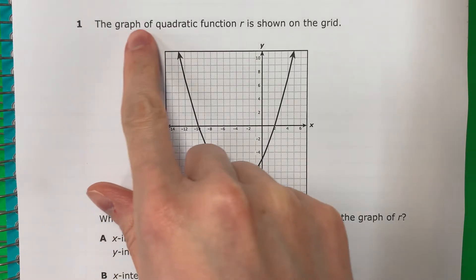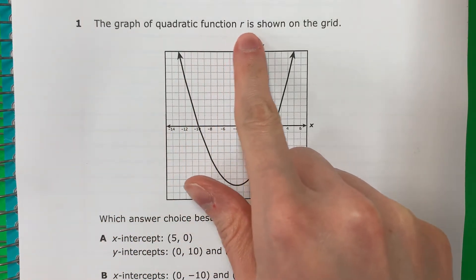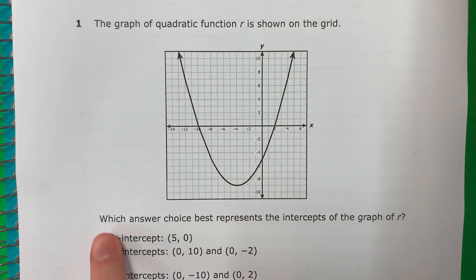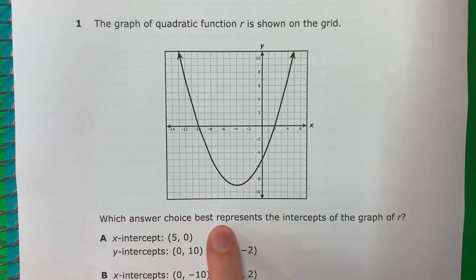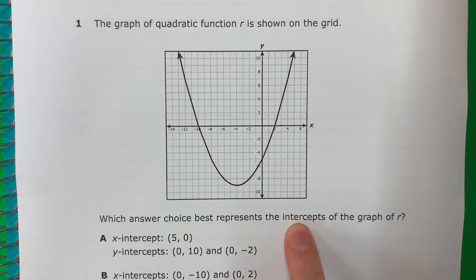Question 1. The graph of a quadratic function R is shown on the grid. Which answer choice best represents the intercepts of the graph of R?